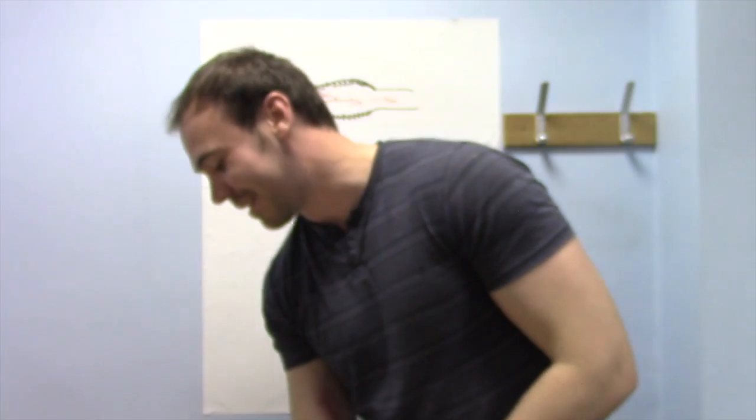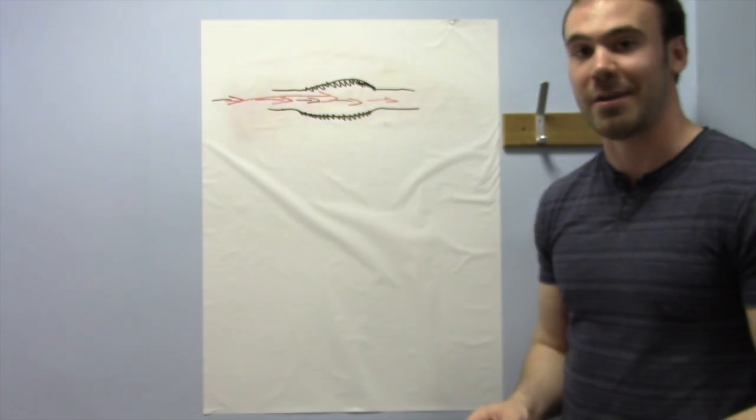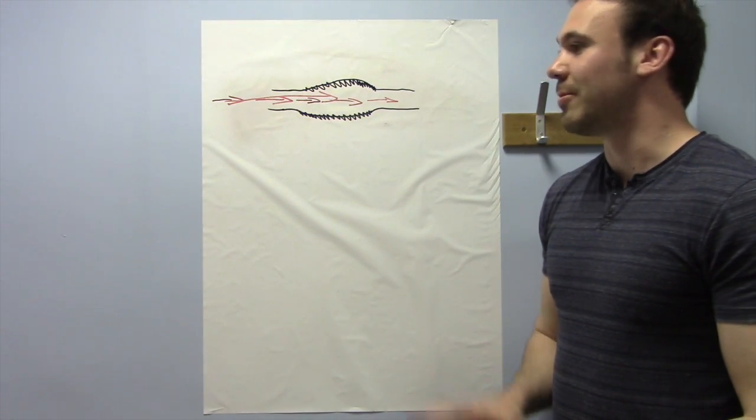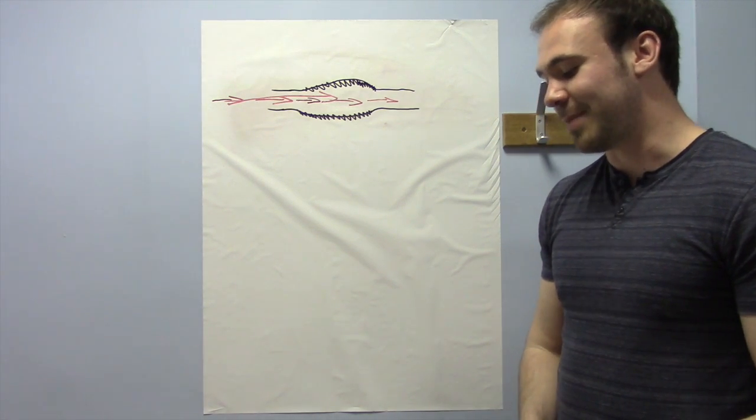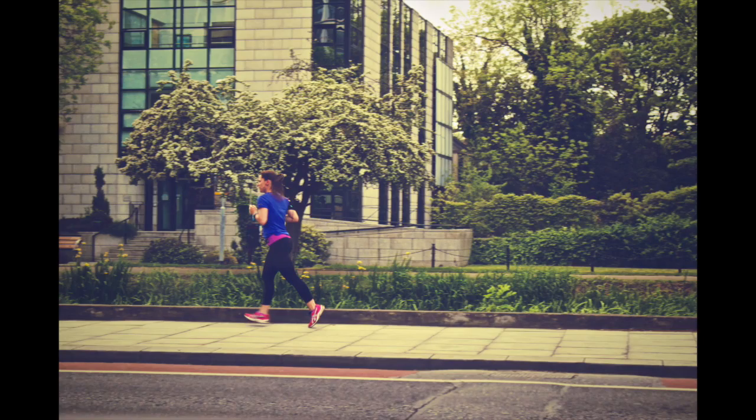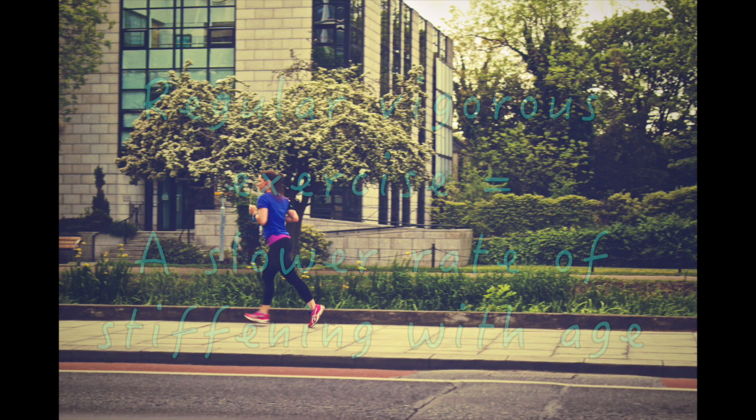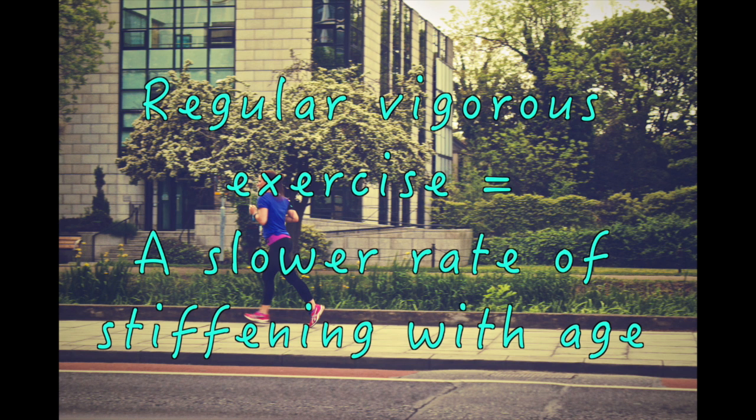The good news is that physical activity, or getting enough physical activity, can help reduce and ward off the effects of arterial compliance with age. And there's been a number of studies done on this. A recent study has shown that taking part in regular recreational activity, especially vigorous exercise, can slow down the rate that people's arteries stiffen with age.